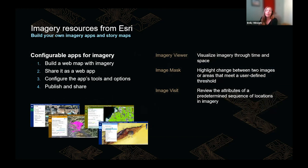Configurable apps for imagery allow you to create focused apps for exploring and visualizing imagery layers. Apps built using these templates are incorporated into the remote sensing curriculum. There are three designed for imagery: Imagery Viewer for exploring imagery through time and space with a swipe tool; Image Mask for interactively highlighting areas of change between two images or areas meeting a threshold for common indices such as NDVI above 0.25; and Image Visit for reviewing a predetermined sequence of locations to validate deep learning results, for example.